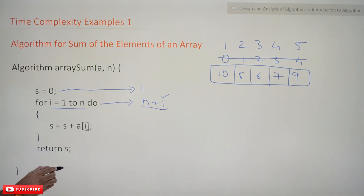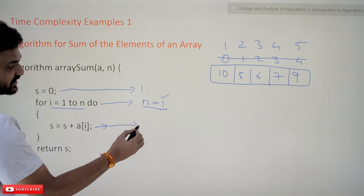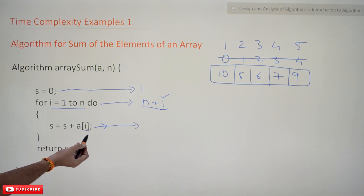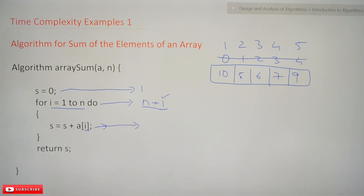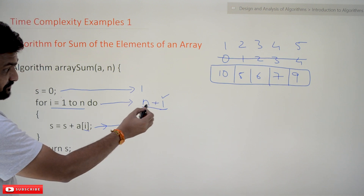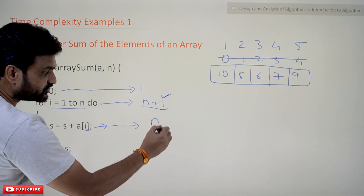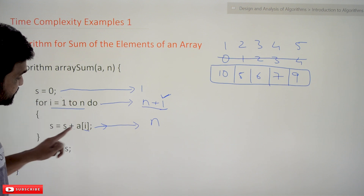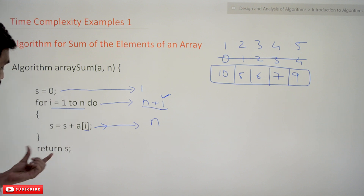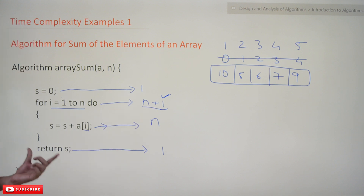Every time we enter this loop, this statement inside the body gets executed. How many times does this line get executed? It is not n + 1 — in the last step where the condition fails, we do not enter the loop body. So this line gets executed n times. The return statement at the end is another program step that gets executed only one time — the last line of code executed before the program terminates.